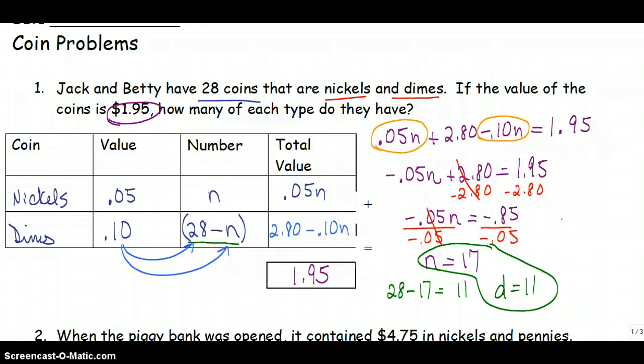And a way that you can check to make sure that you're correct is you can say, okay, I've got 17 nickels, I'm going to multiply 17 times .05, and I'm going to add it to 11 times .10. And when I perform this calculation, I should get $1.95, so let's check that out real quick.